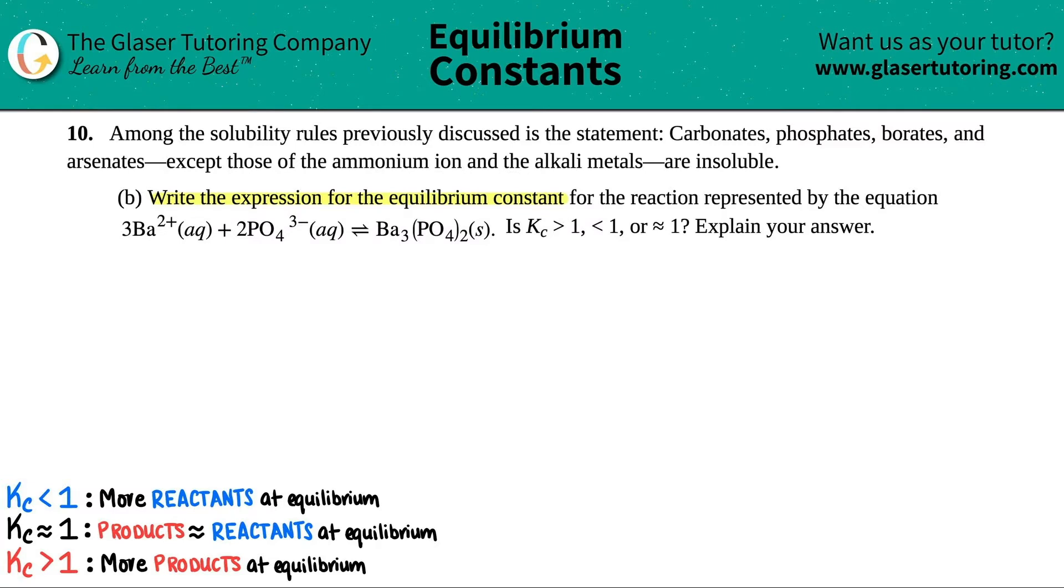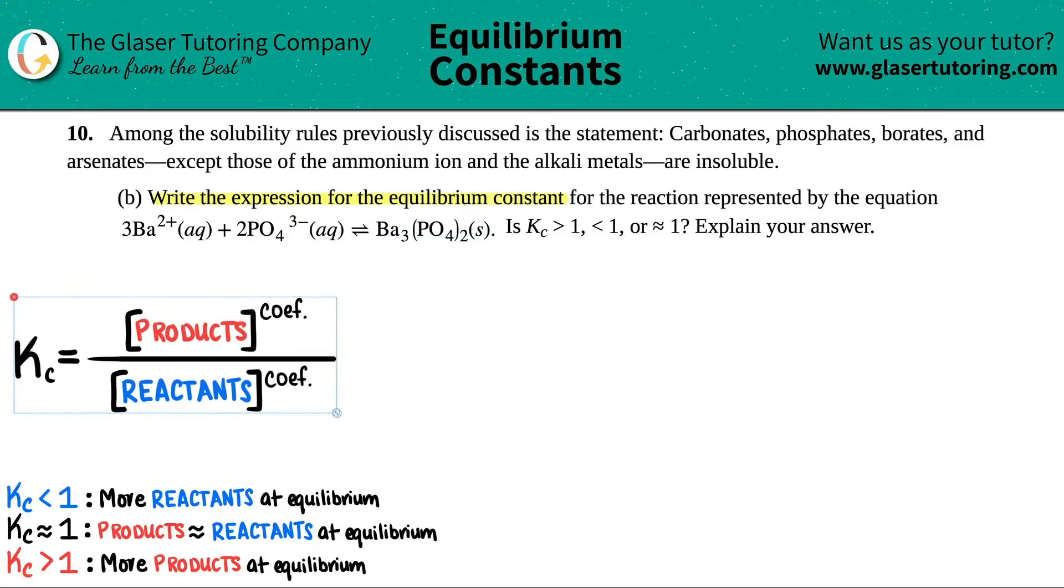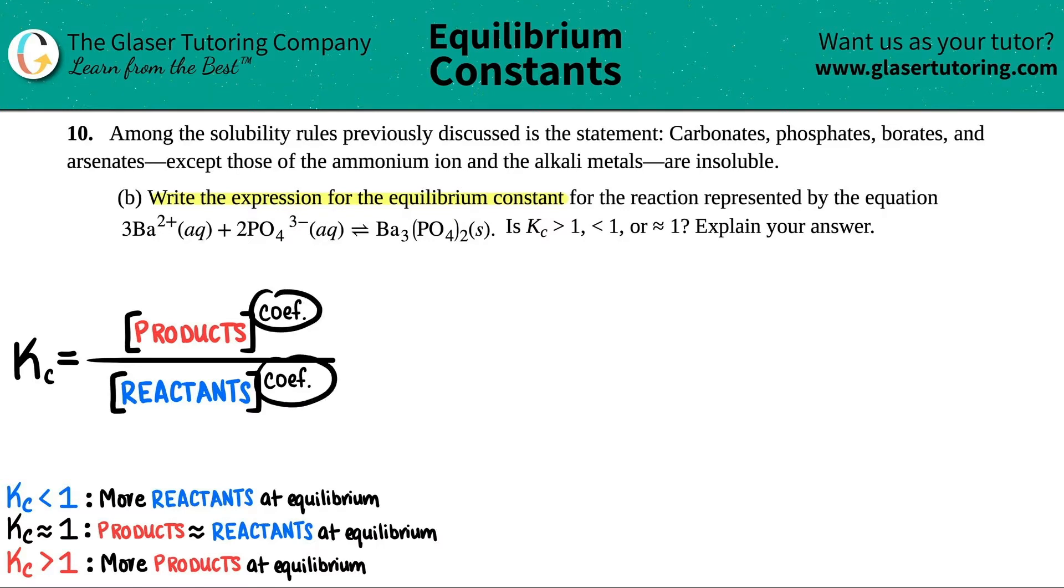We need to write that equilibrium constant expression. It comes from a generalized formula. I just like to say Kc equals products divided by reactants. On a test or quiz, any K value products over reactants is just that simple. Now keep in mind that you will have to raise your numbers to the coefficients, but we will get there.